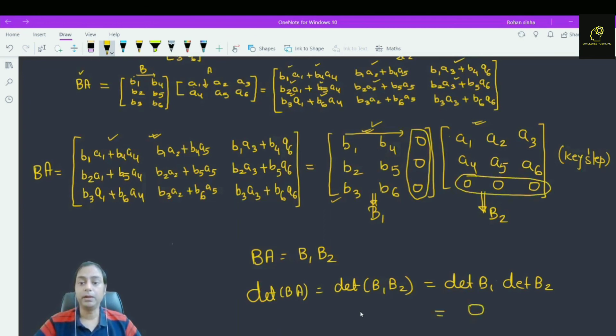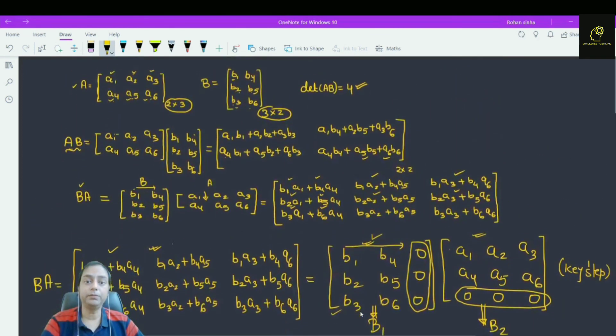What we find? All the three elements in this column here are 0 and all the three elements here in this row are 0. So, this is equal to 0. So, what we find? We find that determinant of BA is 0.